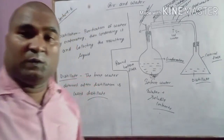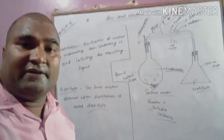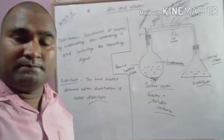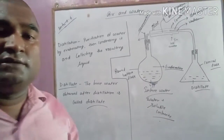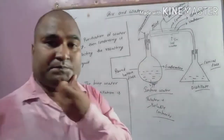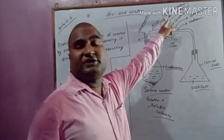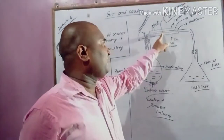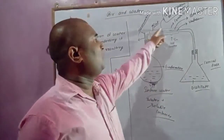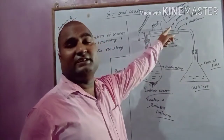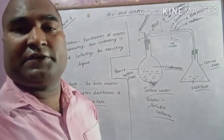Hope you understand. If anyone still has any problem, you can ask. It is written here that condensation of vapor takes place in the inner tube due to the cold water present in the outer tube. Thank you.